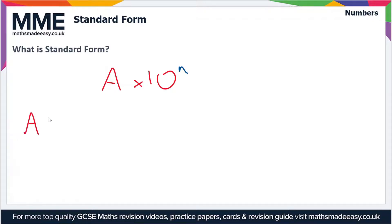But let's just break this down a bit. So first of all, what is A? A can be any number that's between one, including one, and 10, but it does not include 10. So it could be 1.5, it could be 5, it could be 9.9, but it can't be 10, and it can be any decimal in between these values.